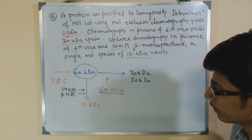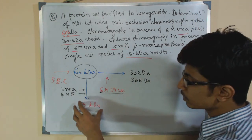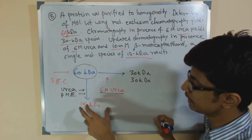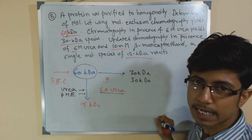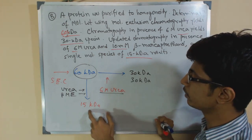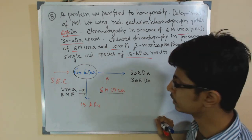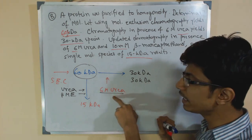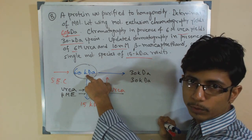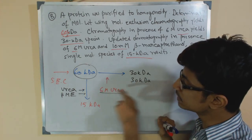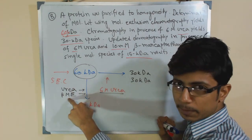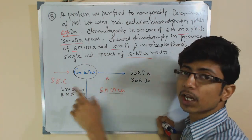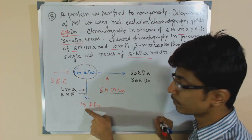By looking at it, what we can say is that each time once we get the band after chromatography, we load it into the gel to find out the weight — finding 15 KD, 30 KD, etc. During this process, when only urea is used, it simply disrupts the globular structure to form 30 KD. But when you use urea and BME, urea destabilizes the structure to make it linear and BME breaks the disulfide bridges.